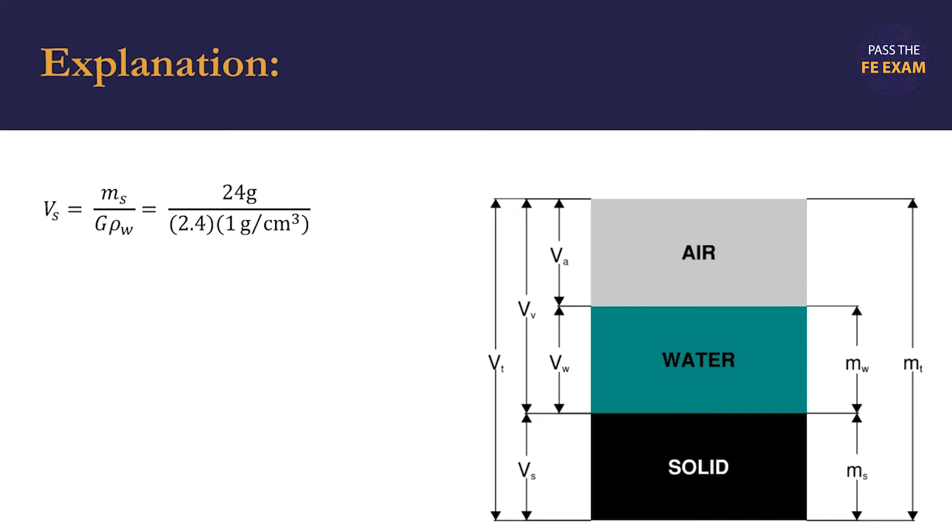We were provided with the mass of the solids, 24 grams. So we use the oven dried mass because that is the mass of the soil sample after it's been dried in the oven to remove the water that is in the sample, which adds 4 grams to create the total mass of 28 grams.